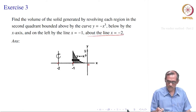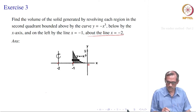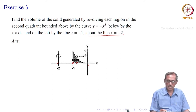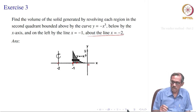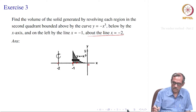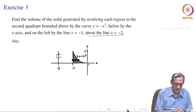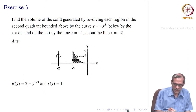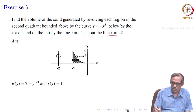The region is to the left of y equal to minus x cubed in the second quadrant, below by the x axis, and on the left by the line x equal to minus 1. This shaded region is to be revolved about the line x equal to minus 2, which is parallel to the y axis.